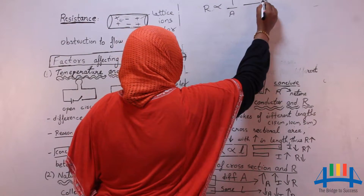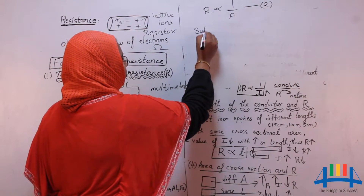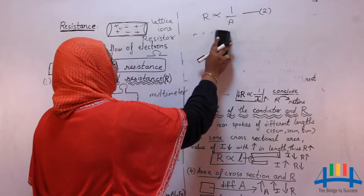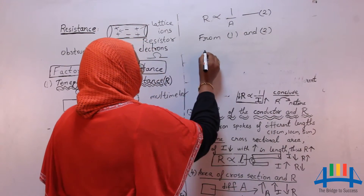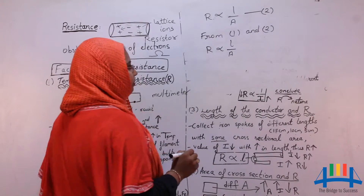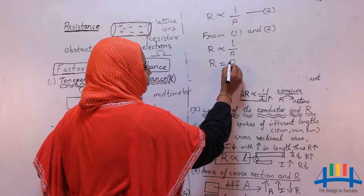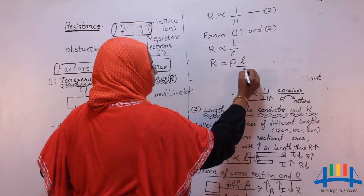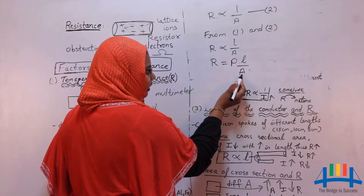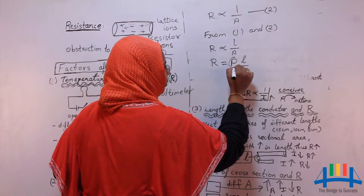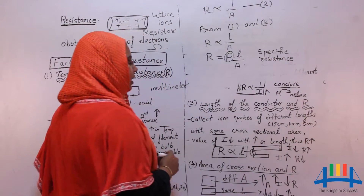Taking equation 1 (R proportional to L) and equation 2 (R inversely proportional to A), we can combine them to write: R is proportional to L by A. To remove the proportionality sign, we introduce a constant rho, giving R equals rho times L by A. Here, R is resistance, L is length of the material, A is area of cross-section, and rho is called specific resistance or resistivity.